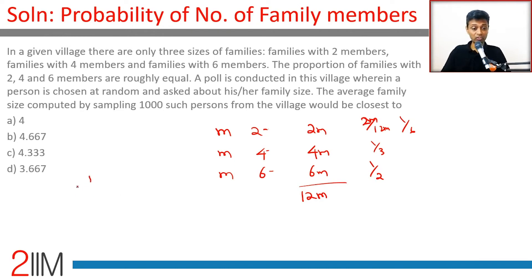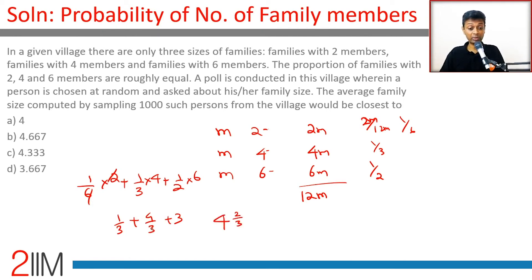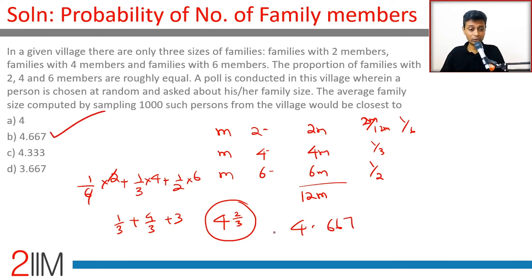So one sixth of people say they come from a two-member family, one third say four-member, and one half say six-member. The weighted average is: (1/6)×2 + (1/3)×4 + (1/2)×6 = 2/6 + 4/3 + 3 = 1/3 + 4/3 + 9/3 = 14/3 ≈ 4.667.